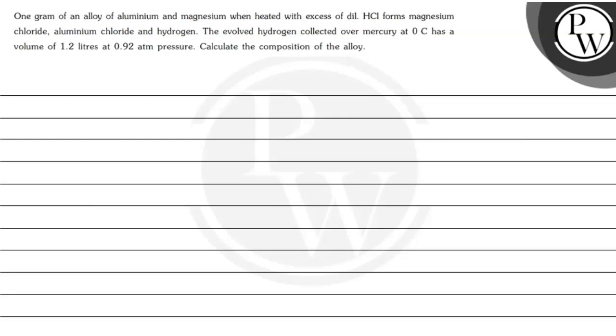Hello, let's read the question. The question says that one gram of an alloy of aluminum and magnesium when heated with excess of dilute HCl forms magnesium chloride, aluminum chloride, and hydrogen. The evolved hydrogen collected over mercury at 0 degrees Celsius has a volume of 1.2 liters at 0.928 atm pressure. Calculate the composition of the alloy.